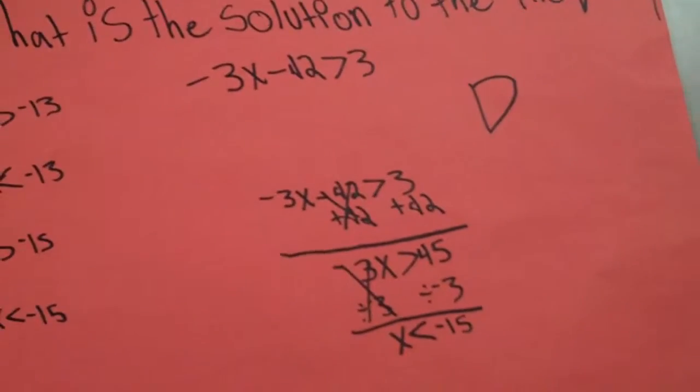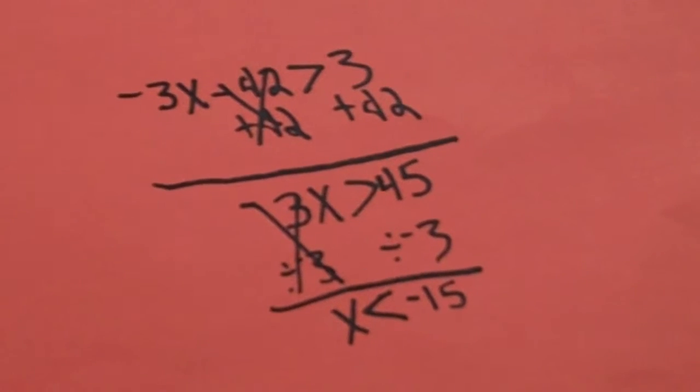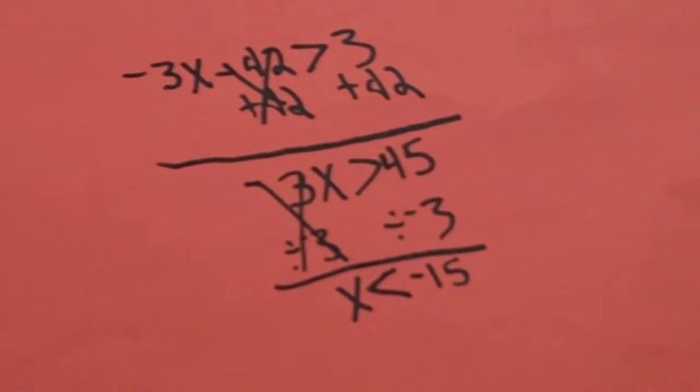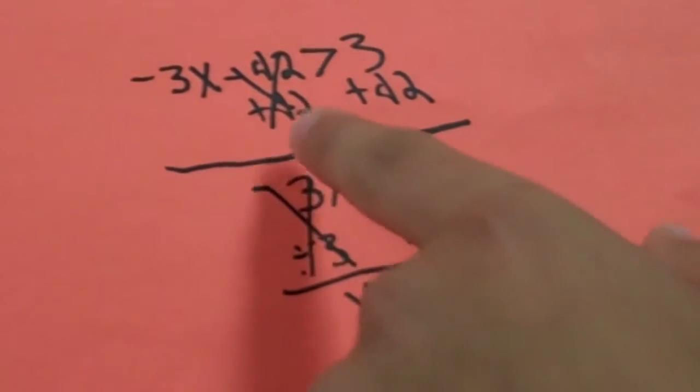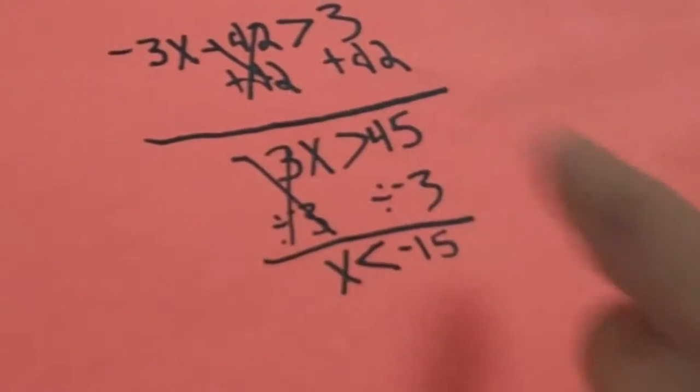So how I solved for negative 3X minus 42 is greater than 3. I first did the opposite operation. So I added 42 to both sides. The 42 cancels out.